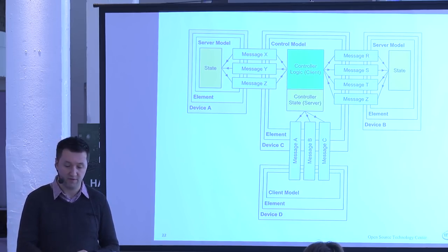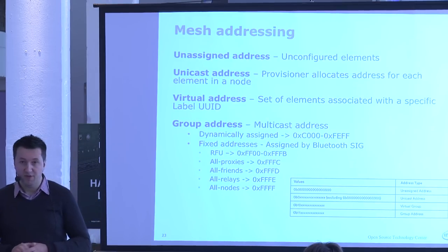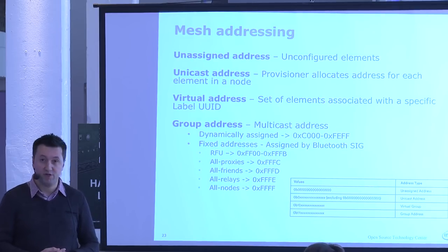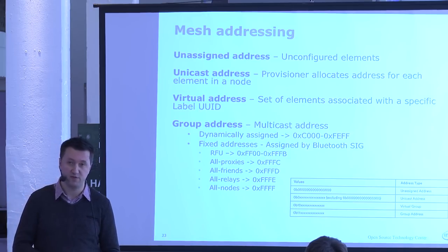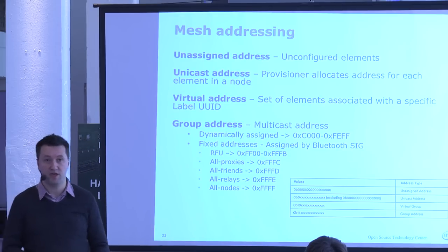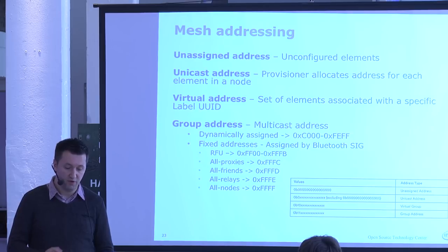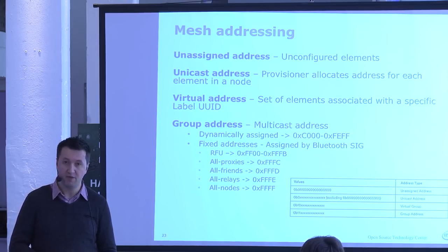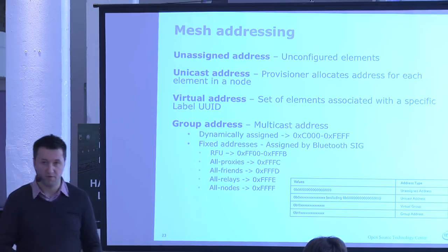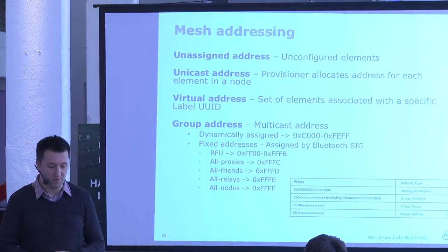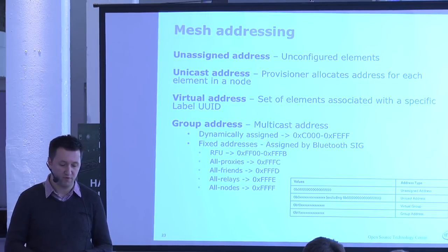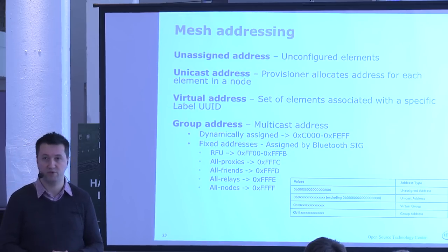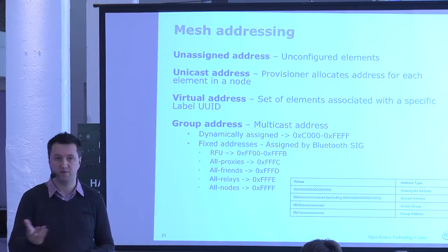Addressing has multiple types: an unassigned address for unconfigured devices; a 16-bit unicast address assigned per element (not per node); virtual addresses as 128-bit UUID labels; group addresses for publish-and-subscribe; and magic fixed group addresses like 'all proxies', 'all friends', 'all relays', or 'all nodes'. For example, you can send a single message to all nodes changing the TTL from 7 to 8, and everyone picks it up — given you have the right application key.